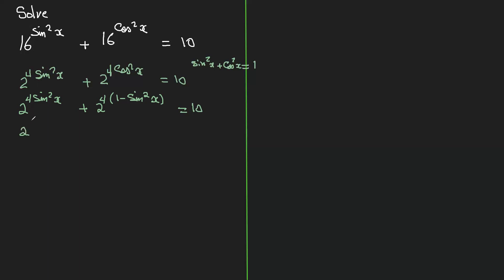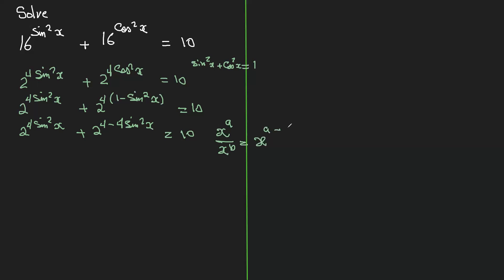I will rewrite this again, distributing the 4 into the bracket to get 4 minus 4 sin squared x. Now we're going to use the exponent law: x to the power of a over x to the power of b equals x to the a minus b.